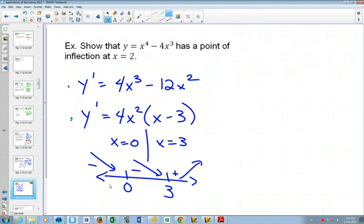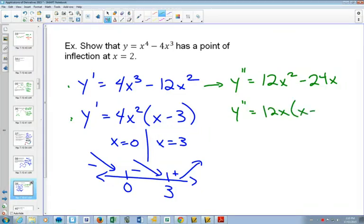Sometimes it won't. So for this one, I will use my original form here. I'll just go from that one to that one. 12x squared minus 24x. And so I've got 12x that I can factor out, x equals 0 and x equals 2.